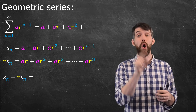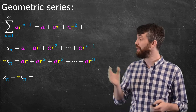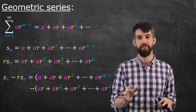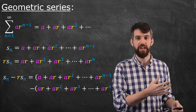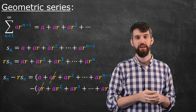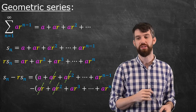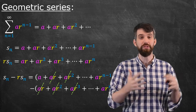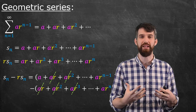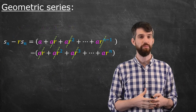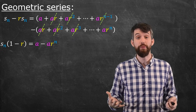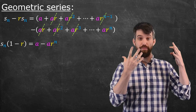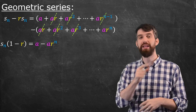Let me look at what the partial sum minus r times the partial sum is. There is an enormous amount of cancellation. You see there is a plus ar and a minus ar — those two terms cancel. There's a plus ar squared and a minus ar squared — those cancel. In the dot dot dot, there'd be a positive ar cubed and a minus ar cubed, so that cancels. Also in the dot dot dot is a subtraction of ar to the n minus 1, which cancels the ar to the n minus 1. So the only thing remaining is a and ar to the n. This difference, factoring out, gives us: the partial sum times 1 minus r equals a minus ar to the n.